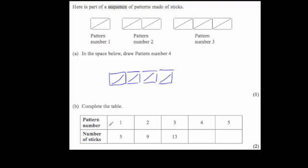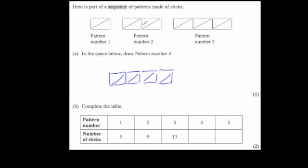It then says complete the table. Pattern 1 has 5 sticks — let's check: 1, 2, 3, 4, 5, yes. Pattern 2 has 9 sticks. We've added on 4 each time, so pattern 3 is 13, pattern 4 would be 17, and pattern 5 would be 21.